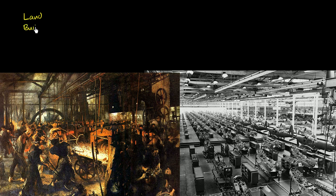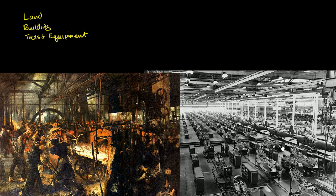Then you're going to need a building — most probably a building. You're going to need some tools and equipment. Then you might need some raw materials. In this case it might be iron; over here you would need some metal. You might need some electricity or some oil to keep the production lines going. So you're going to need some raw materials.